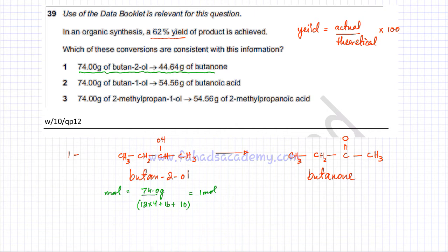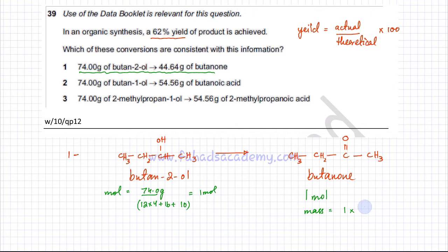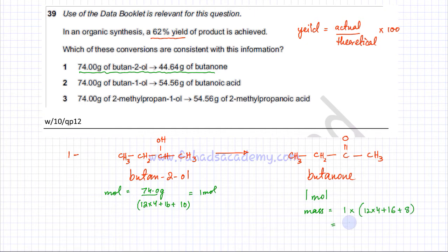Since 1 mole of butan-2-ol produces 1 mole of butanone in a 1:1 ratio, theoretically the amount of butanone should be 1 mole. Converting to mass: mass = moles × molar mass = 1 × (12×4 + 16 + 8 hydrogens) = 48 + 16 + 8 = 72 grams. So the theoretical mass of butanone is 72 grams.